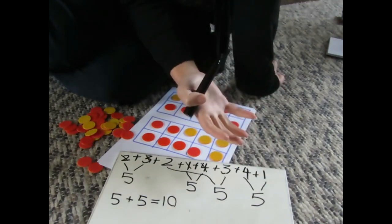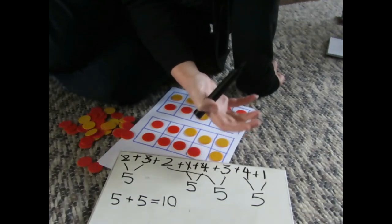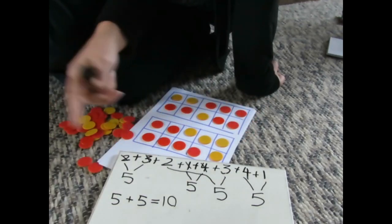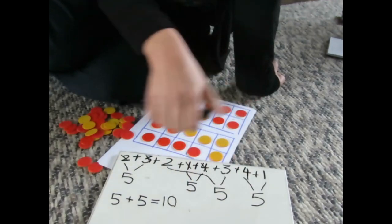Brilliant okay so we've just made, we've noticed four bonds to five and we know that four lots of five are 20 or we could count in fives. Five, ten, fifteen, twenty. Fantastic.